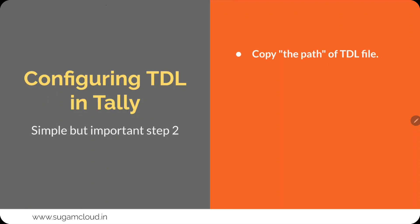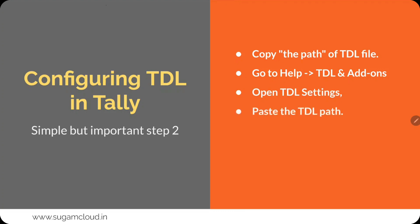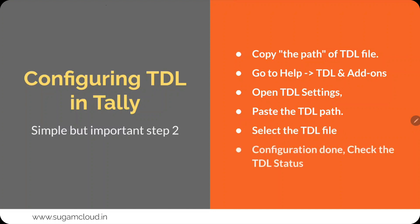Now you have to understand how to configure your TDL in Tally. First, you need to copy the path of the TDL file — this is very, very important. Second, go to the Help menu and select TDL and Add-ons. From there, open TDL settings, paste the TDL path, then select the TDL file and check the TDL status.